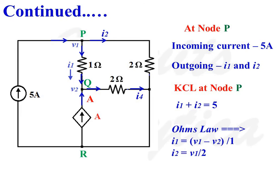There are three currents associated with node P: one incoming current and two outgoing currents. The current sourced by the 5A current source is incoming, while the other two currents I1 and I2 are outgoing. According to KCL, I1 plus I2 is equal to 5. I1 is the current flowing through the 1 ohm resistance, which can be written as V1 minus V2 divided by 1.